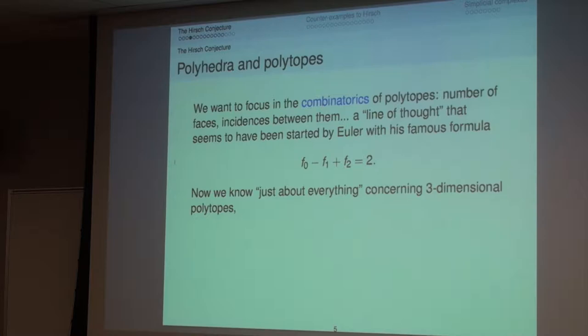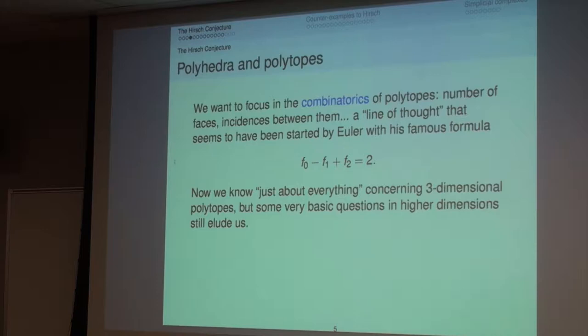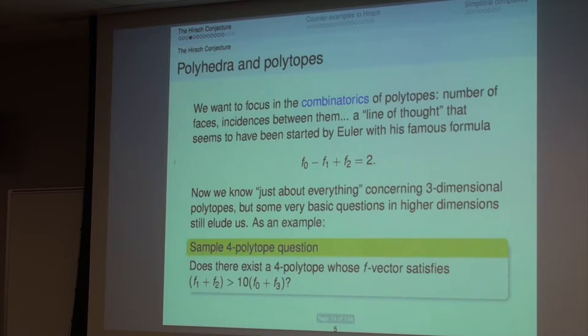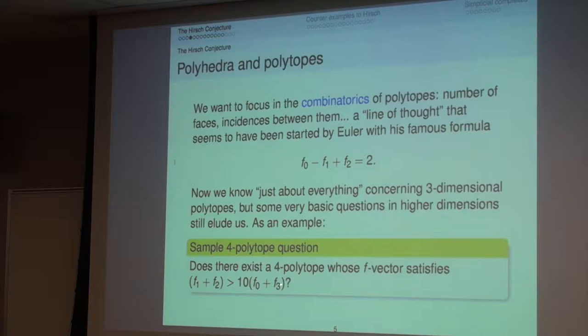For three-dimensional polytopes, we know more or less everything — we can characterize their graphs. But if we go just one dimension higher, there are basic questions we don't know the answer to. For example, you can spend the rest of this colloquium thinking about this question: can you construct a four-dimensional polytope whose f-vector satisfies the inequality that the number of one- and two-dimensional faces is greater than ten times the zero- and three-dimensional ones? This illustrates a big difference between three and four dimensions.